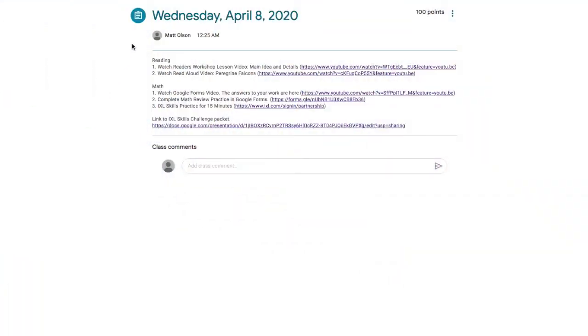When you went into your Google Classroom today, you probably noticed that there was an extra thing to do in your math assignments. Number one was to watch the Google Forms video. You're doing that right now, and if you keep watching to the end, you're going to see the answers to your work are right here in this video. Number two is to complete your math review practice in Google Forms. I'll show you how to do that in just a moment. And number three will be to do your iExcel practice again for 15 minutes like you've done already this week.